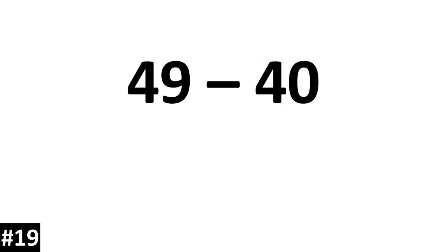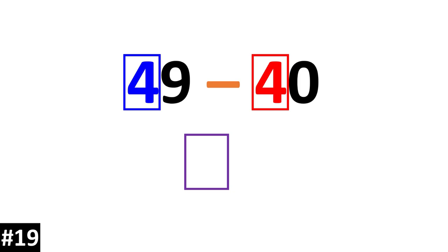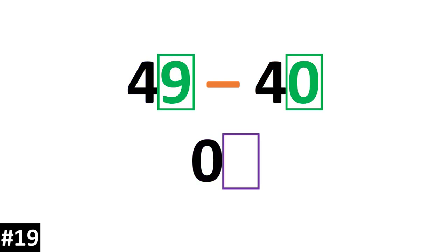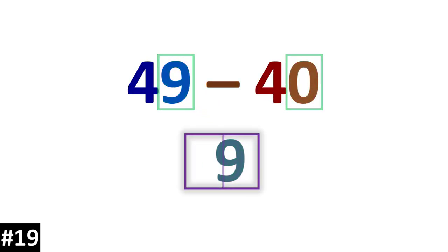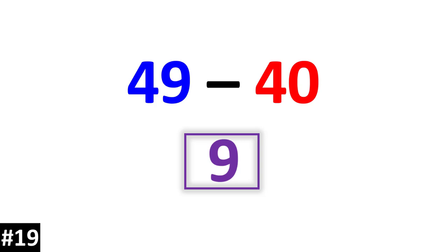49 minus 40. 4 10s minus 4 10s is 0 10s. We look to the ones: 9 minus 0 is 9. So the answer is 9.